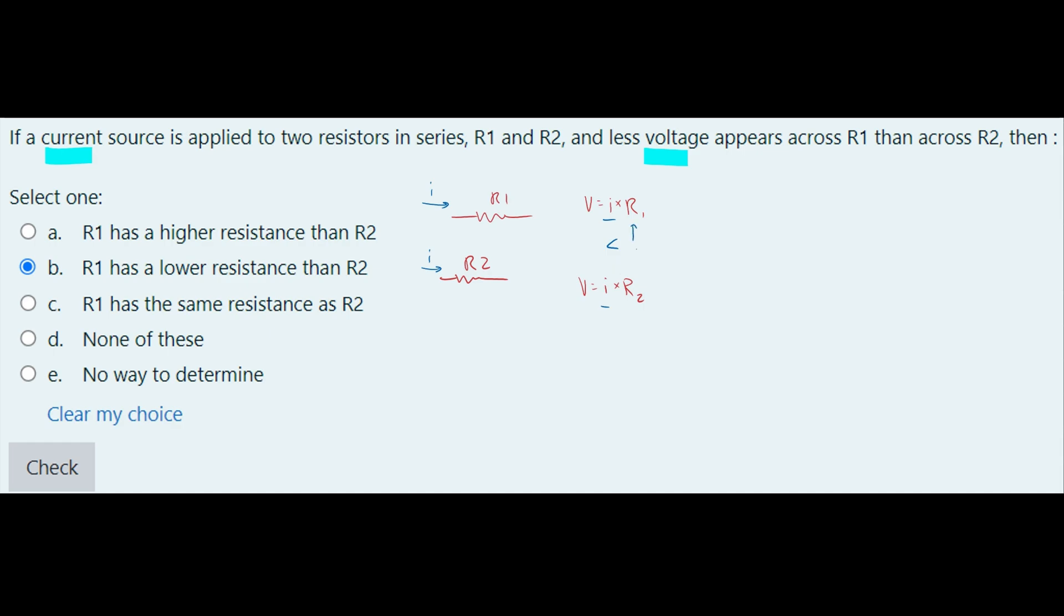That means that this resistance has to be less. Because if this has a greater resistance, well, our current, which is the same, times a higher resistance is going to yield a higher voltage. And if we have a lower resistor times the same current, it's going to yield a lower voltage. So that means R1 has to have a lower resistance than our R2.